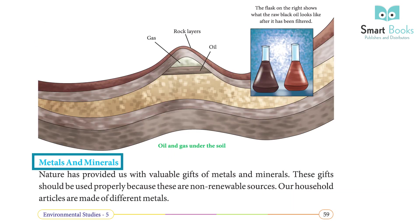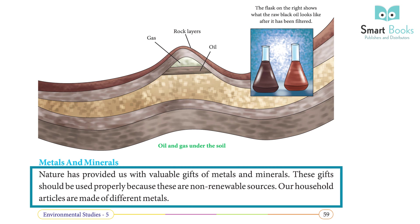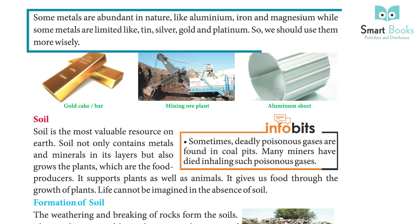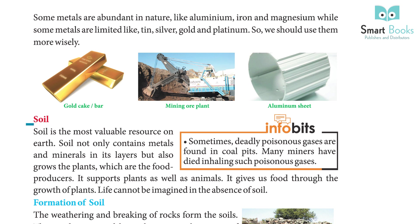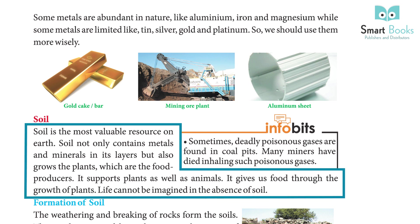Nature has provided us with valuable gifts of metals and minerals. These gifts should be used properly because these are non-renewable sources. Our household articles are made of different metals. Some metals are abundant in nature like aluminum, iron, and magnesium, while some metals are limited like tin, silver, gold, and platinum. So we should use them more wisely.